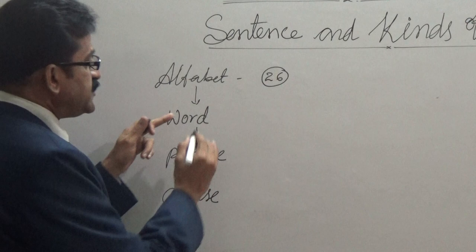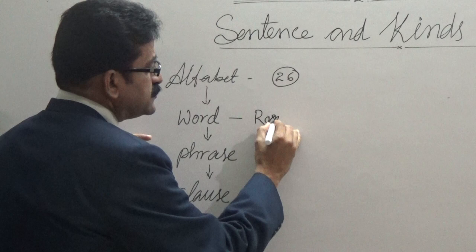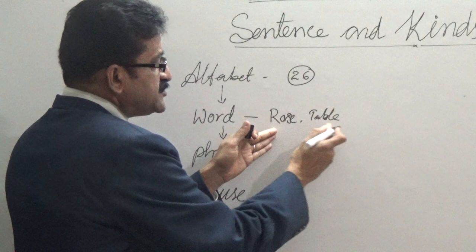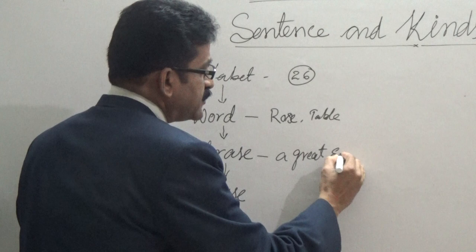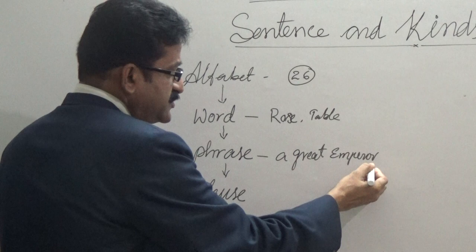A word is just like 'rose' or 'table' — a combination of letters that makes a meaningful word. Such kinds of words, for example 'a great emperor' — these three words make a phrase. That means 'a great emperor' makes some sense, but not complete sense.